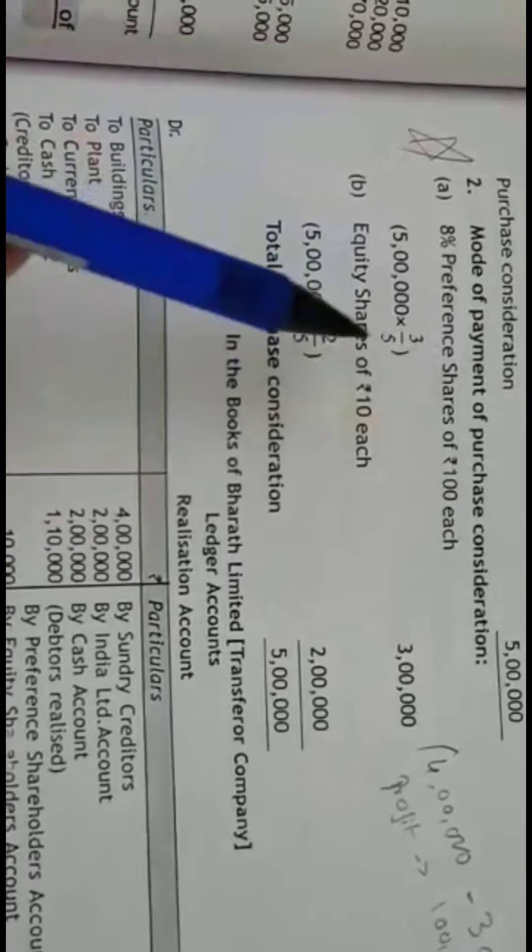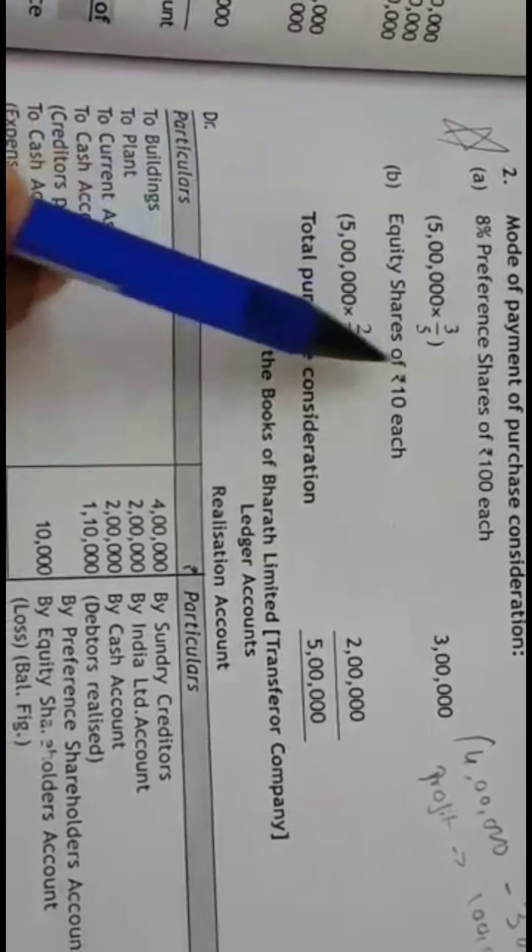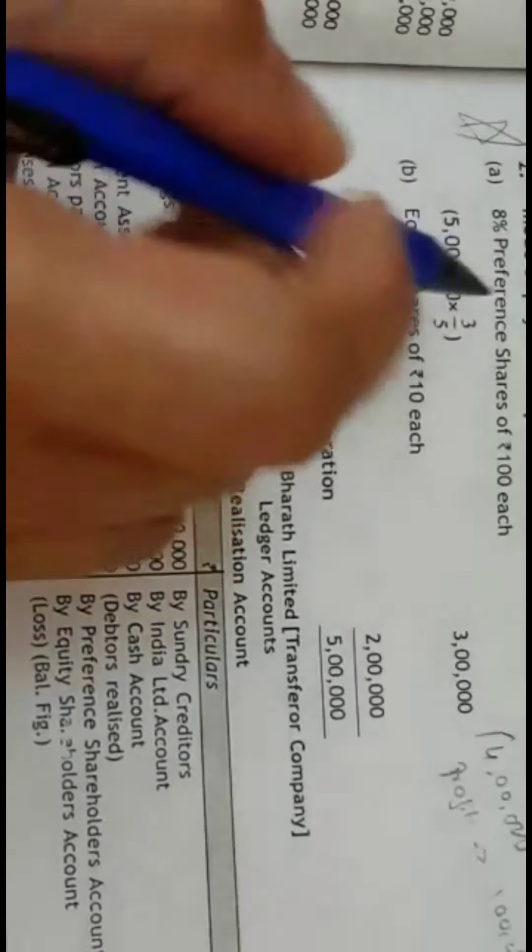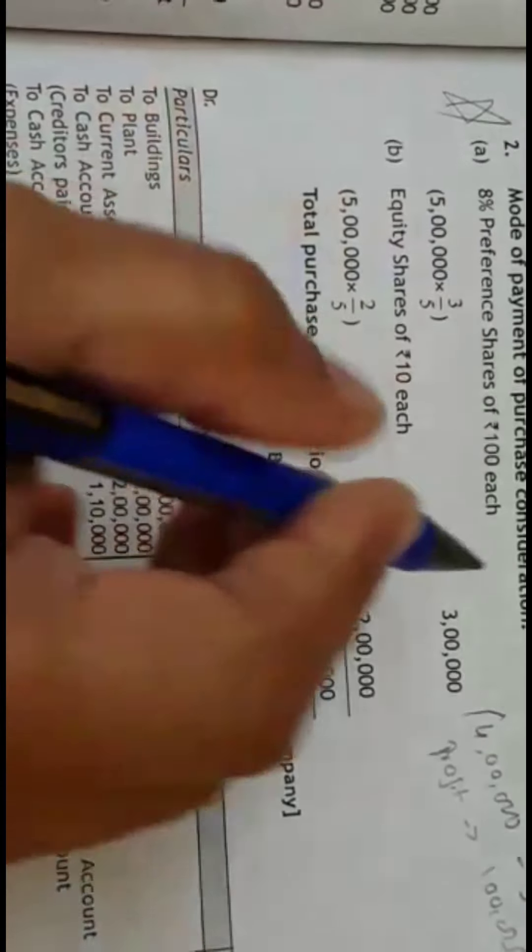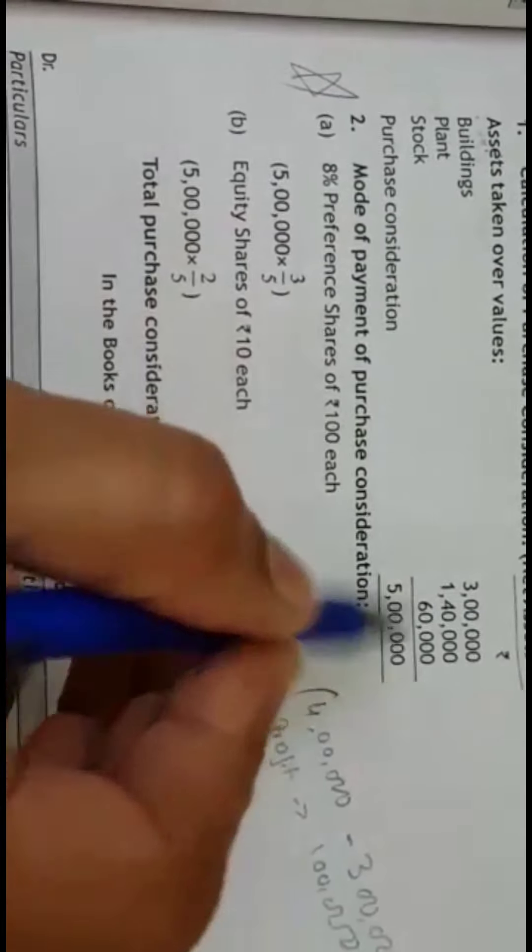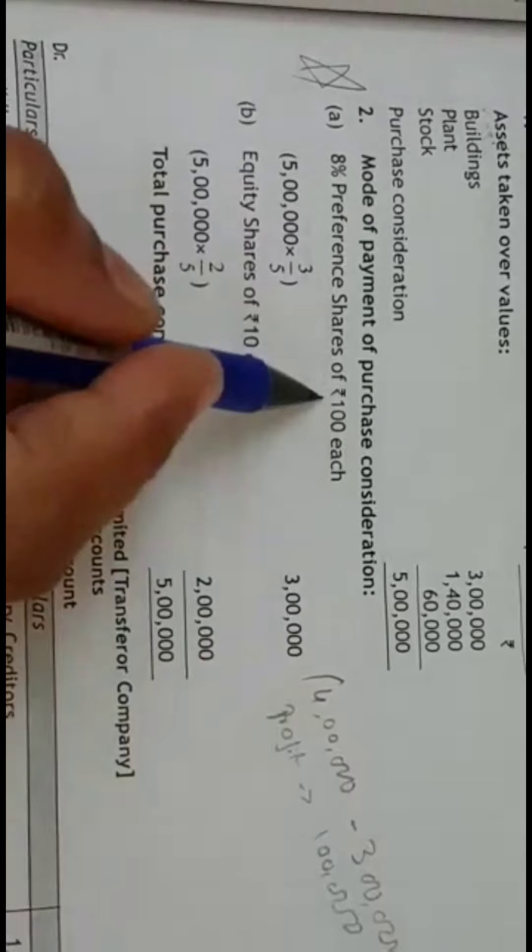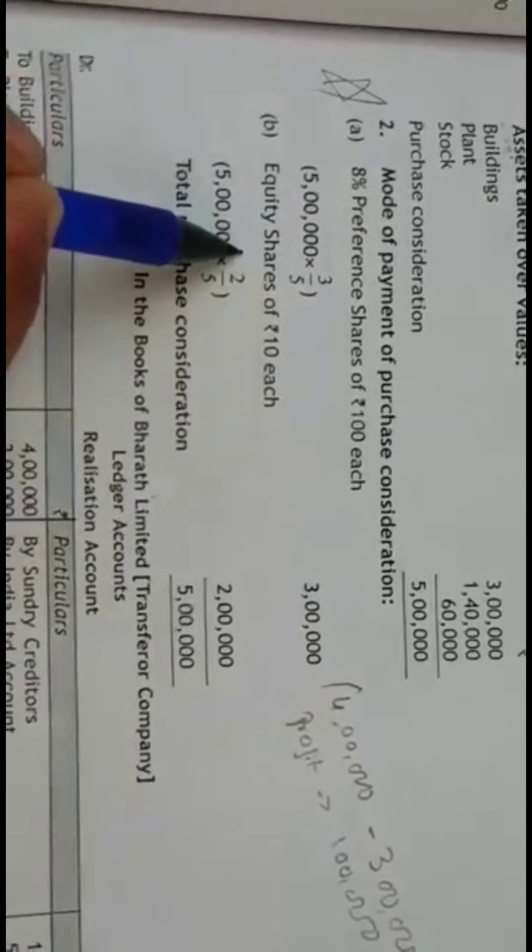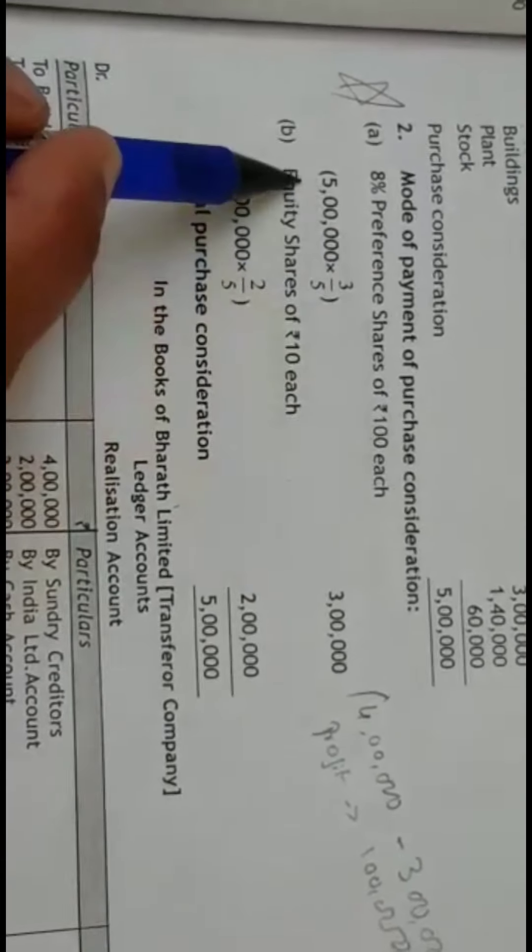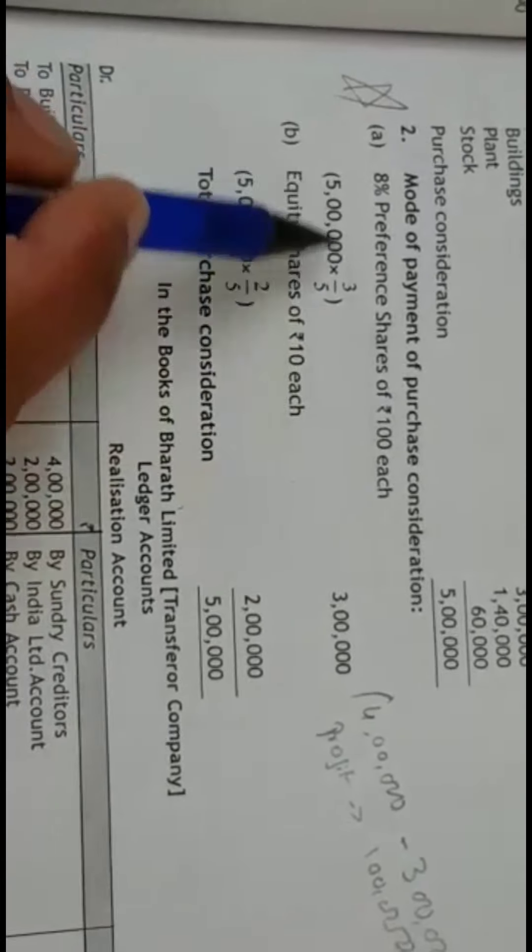The next step will be the mode of payment or discharge of PC. PC is paid in the form of preference shares and also equity shares in the ratio of 3 is to 2. How you are going to account for this 3 is to 2? The total PC is 5,00,000. This 5,00,000 should be distributed between the preference share capital and equity share capital in the ratio of 3 is to 2.